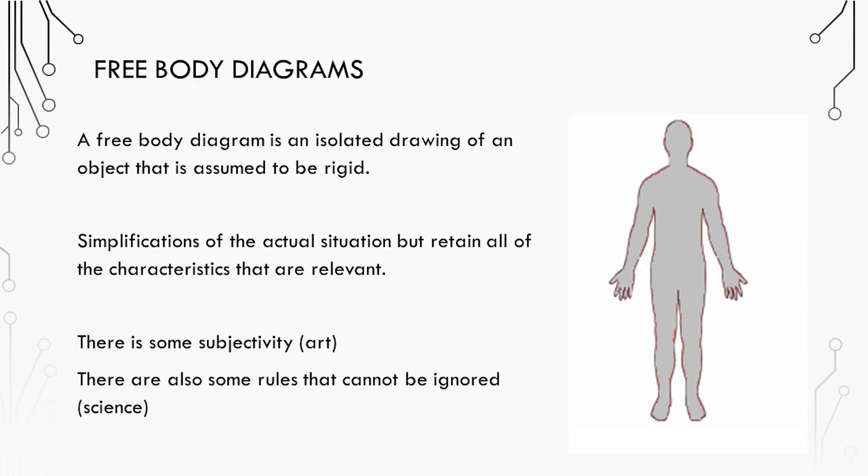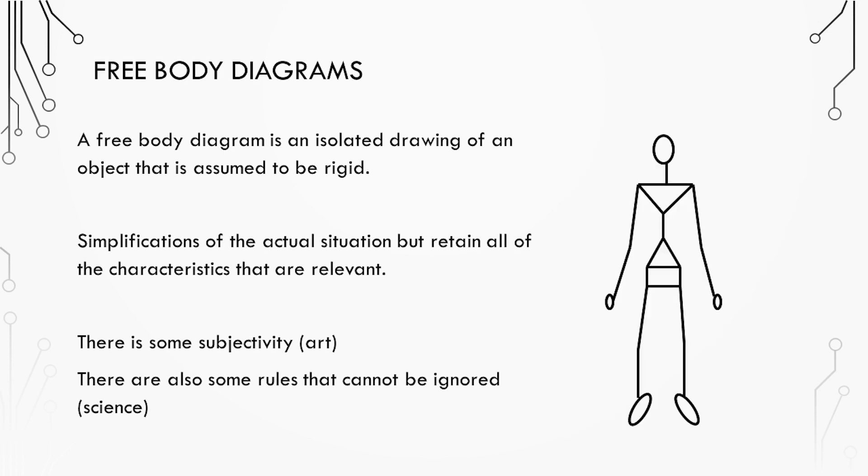A free body diagram is an isolated drawing of an object that is assumed to have rigid segments. Free body diagrams are simplifications of the situation but they retain most of the characteristics that are relevant. Therefore there's some subjectivity or skill associated with drawing a free body diagram but there are also some rules that shouldn't be ignored related to the scientific principles behind this.